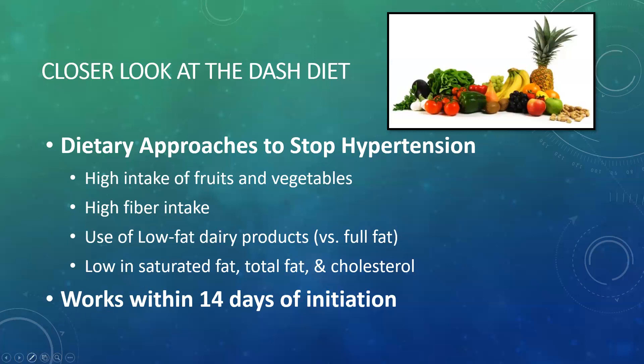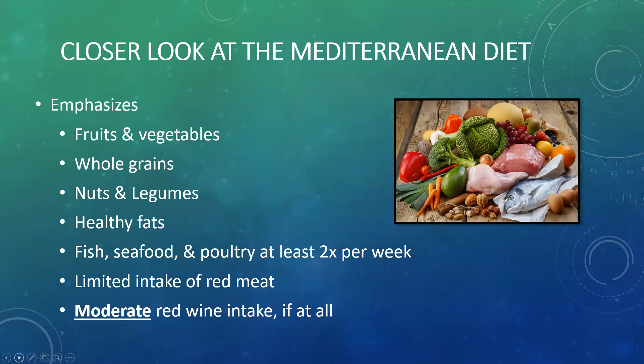We also see a reduction in blood pressure with a Mediterranean diet. Unlike the DASH diet, research trials have also shown that the Mediterranean approach to eating reduces A1C levels. When we look at the components of a Mediterranean diet, red wine is actually the least critical part. If you are consuming alcohol, it needs to be one to maybe two servings per day, or those health benefits are pretty much erased. We also see with this approach more whole grains, nuts, beans, healthier fats, less red meat, and more seafood and poultry about twice per week on average.